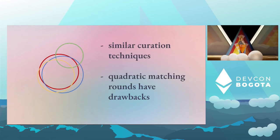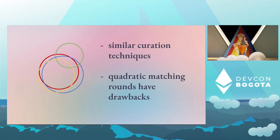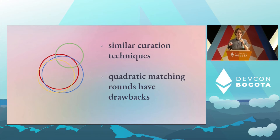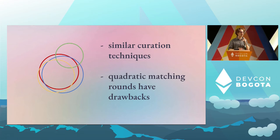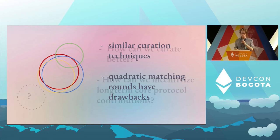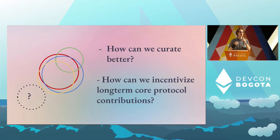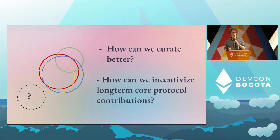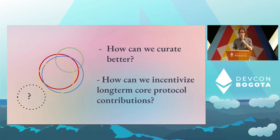However, especially the quadratic funding mechanisms, they often use similar curation techniques — for example, weighting the matching pool division according to how many people donate to a specific grant. This is not to say this is a bad thing, but it can have a challenge when it comes to getting funding to areas of the protocol that may not be a fit for quadratic funding. So the question is: how can we curate better, specifically related to the core protocol, and how can we incentivize long-term core protocol contributions? This is a big question that's been around as long as open source software has been worked on, and it's not a new problem for Ethereum.